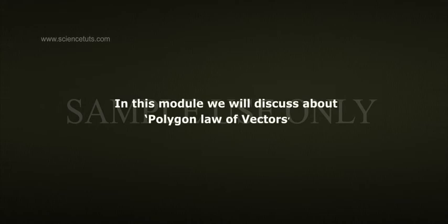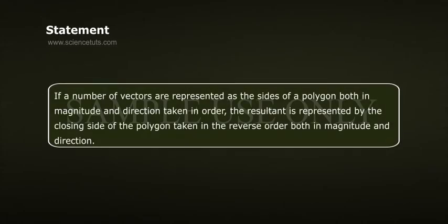Polygon Law of Vectors. In this module we will discuss about Polygon Law of Vectors. Statement: If a number of vectors are represented as the sides of a polygon both in magnitude and direction taken in order, the resultant is represented by the closing side of the polygon taken in the reverse order both in magnitude and direction.